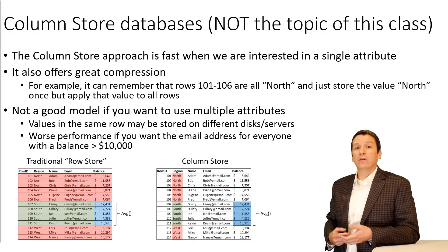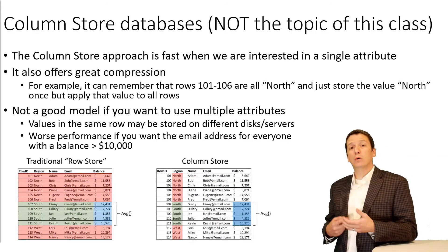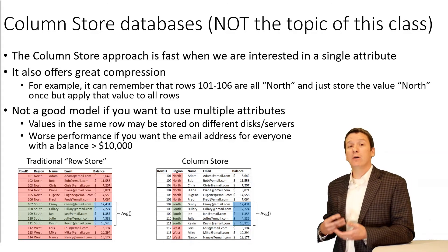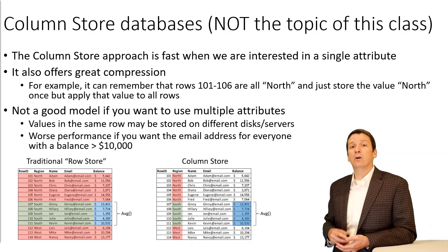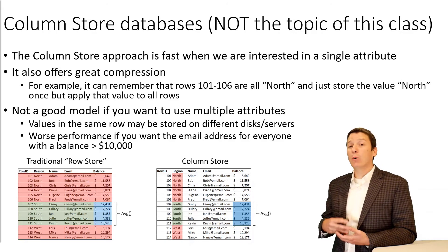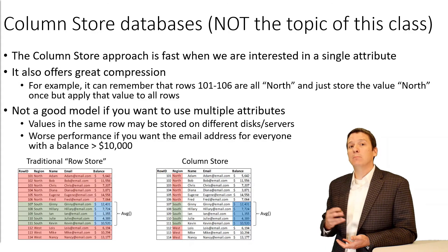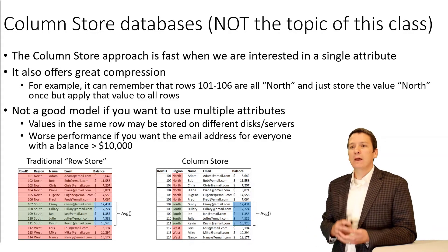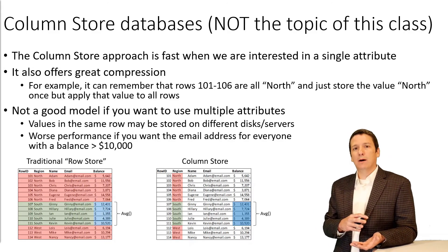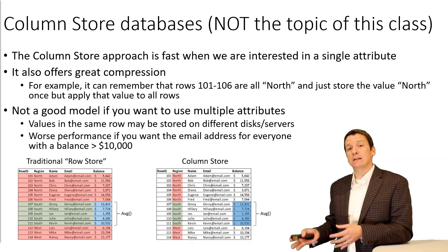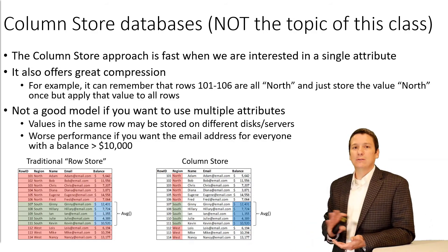The column store approach can be very fast and beneficial when you're interested in just a single attribute or a small number of attributes, and it also has nice benefits around data compression. However, you may take a performance hit if you need to access multiple attributes in the same record. The column store database isn't what we're focusing on in this class, but it's important to clarify the difference between column store and column family to avoid confusion down the road.